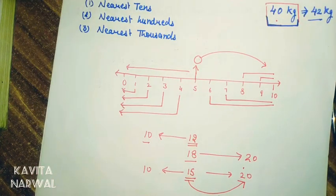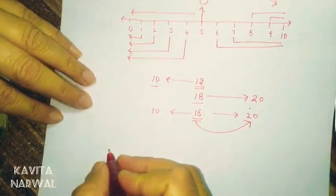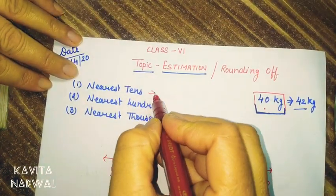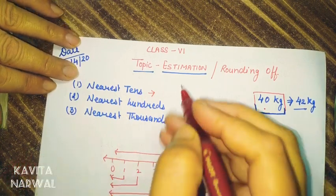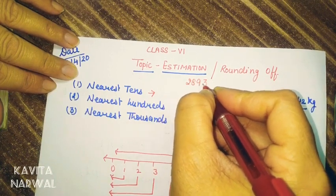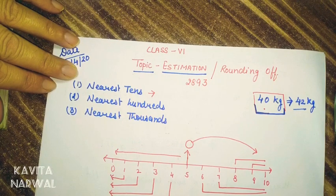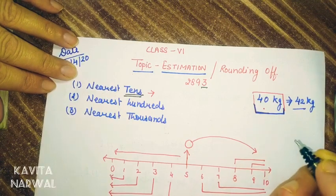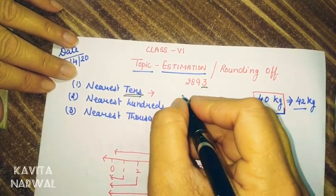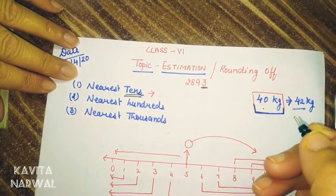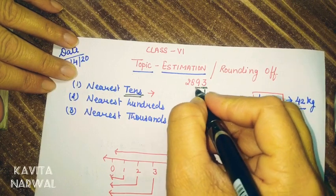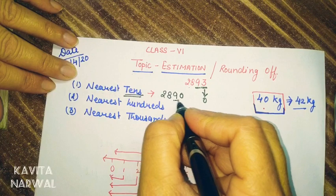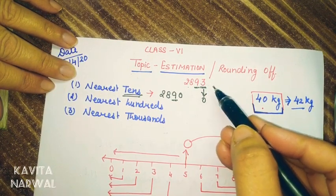Here we follow one rule. In the case of nearest 10, we have to observe the units place always. For example, with the number 2,893 — to round to the nearest 10, observe the unit place. The unit place is 3, which is less than 5, so we consider it as 0 and the tens place remains the same. So the round off of 2,893 nearest 10 is 2,890.